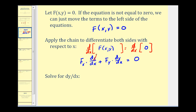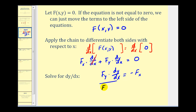Since dx/dx = 1, we now solve for dy/dx. We subtract f_x from both sides, giving us f_y times dy/dx equals the opposite of the partial of f with respect to x. Dividing both sides by f_y gives us our formula: dy/dx equals the opposite of the partial derivative of f with respect to x divided by the partial derivative of f with respect to y.